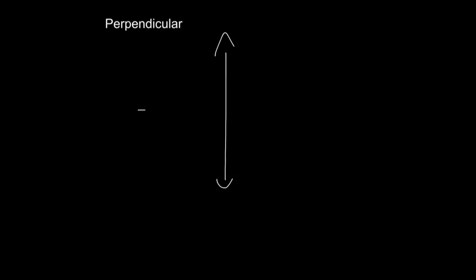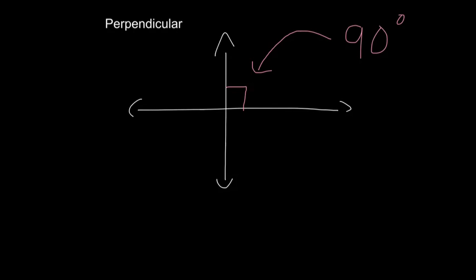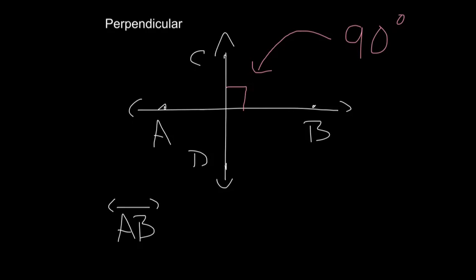Perpendicular lines are two lines that intersect and form a right angle, or a 90 degree angle. Whenever you see a box — not an arch, but a box — you know it's referring to a right angle or 90 degrees. If we had lines AB and CD, we could say that line AB, pay attention to this symbol here, is perpendicular to line CD.